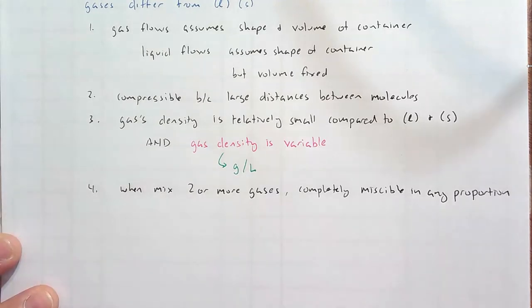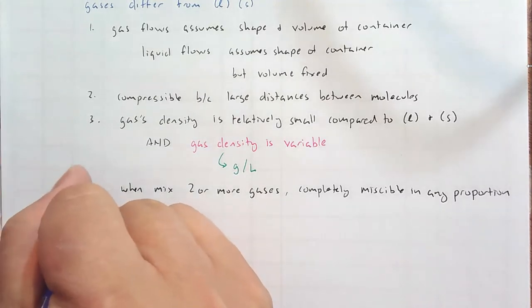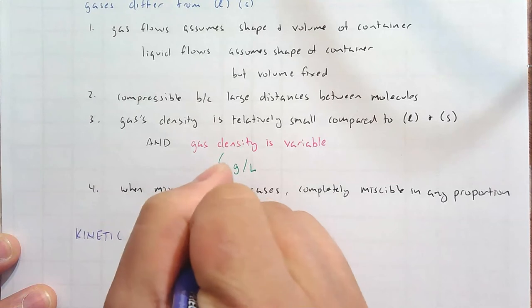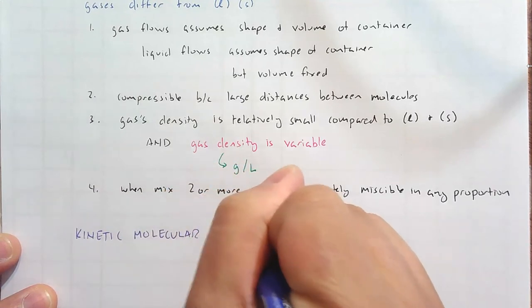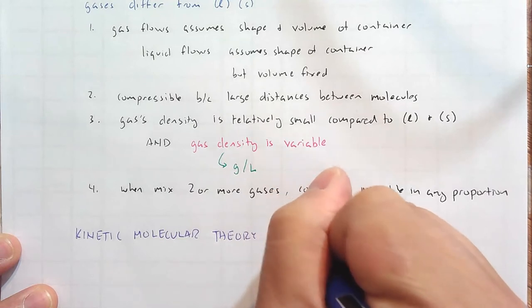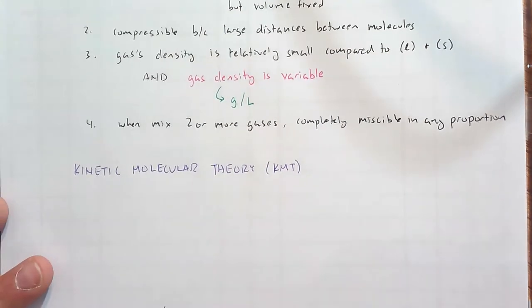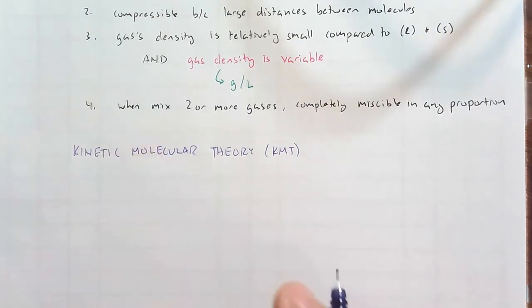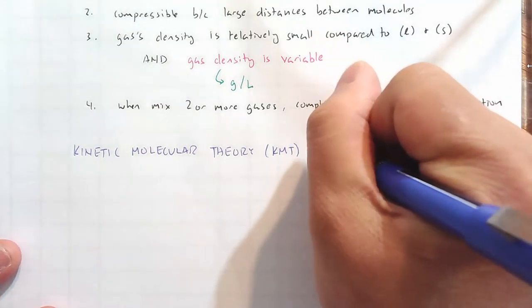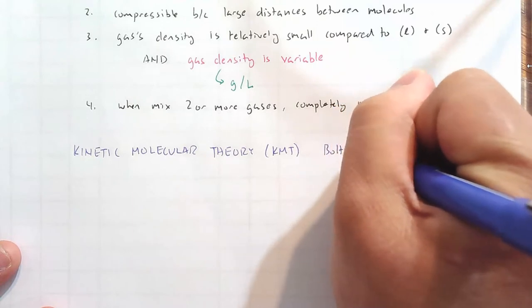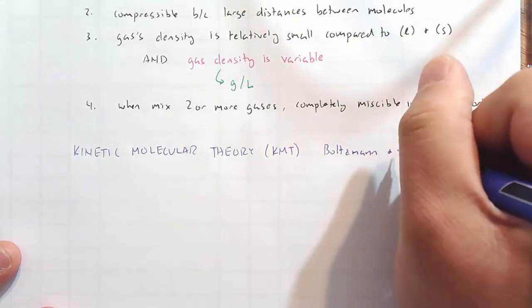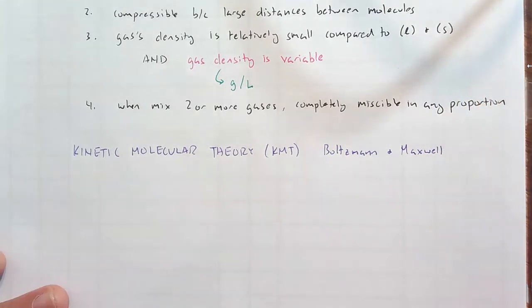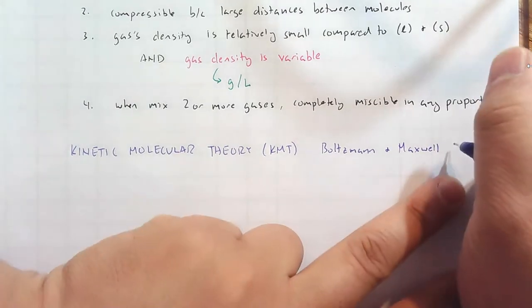Now, let us talk about the kinetic molecular theory, the KMT. And this was developed, actually, by many, many scientists. But the two names most associated with the KMT are going to be Boltzmann and Maxwell. And we'll see these two names in a later video as well. And a lot of this work was done in the 1870s.